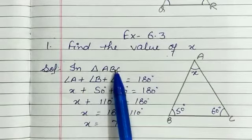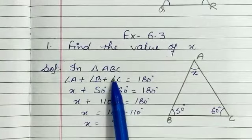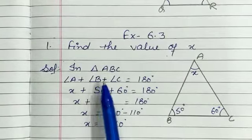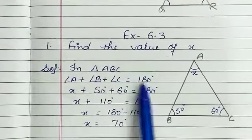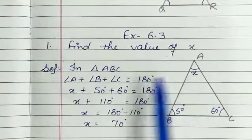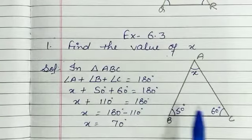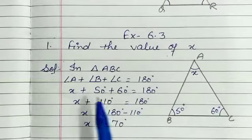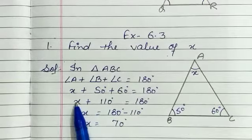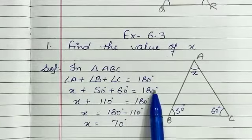In triangle ABC, angle A plus angle B plus angle C is equal to 180 degrees, by the angle sum property. So angle A is equal to X, angle B is equal to 50, and angle C is equal to 60 degrees. So X plus 50 plus 60 is equal to 180.